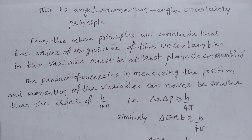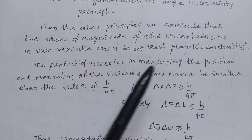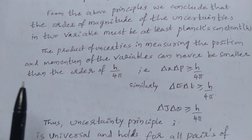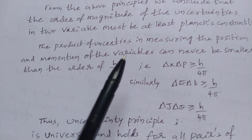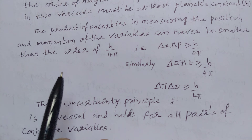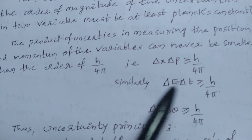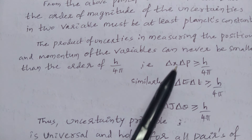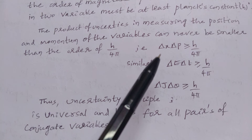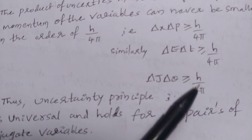From the above principles, we conclude that the order of magnitude of uncertainties in the two variables must be at least Planck's constant. That is known as the uncertainty principle. The accuracy definition states that the product of uncertainties in measuring position and momentum can never be smaller than h by 4 pi: delta x into delta p greater than or equal to h by 4 pi. Similarly, delta E into delta t greater than or equal to h by 4 pi, and delta J into delta theta greater than or equal to h by 4 pi.